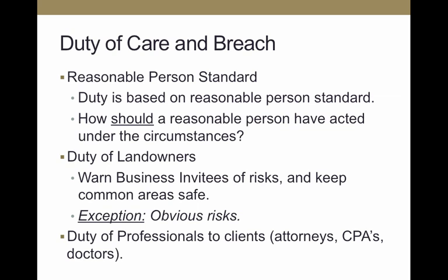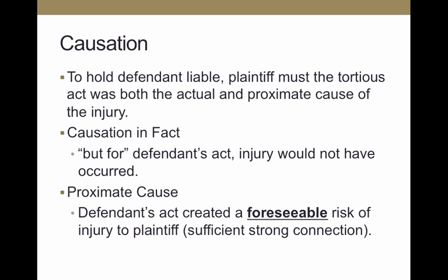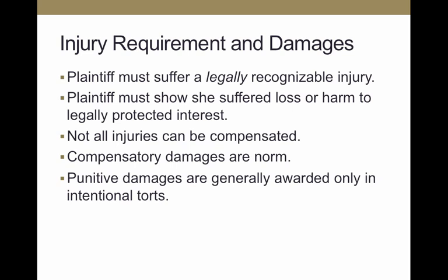Causation is the next element. To hold a defendant liable, a plaintiff must show that the tortfeasor's act was both the actual and proximate cause of the injury. Causation in fact means 'but for' — but for the defendant's act, the injury would not have occurred. Proximate cause means the defendant's act created a reasonable risk of injury to the plaintiff. Not all injuries can be compensated — if the law doesn't recognize it as an injury, such as hurt feelings, it would not be sufficient.